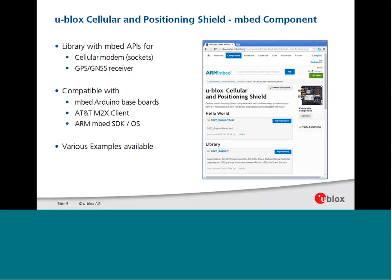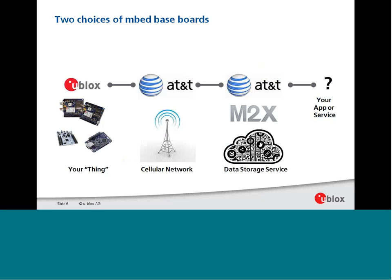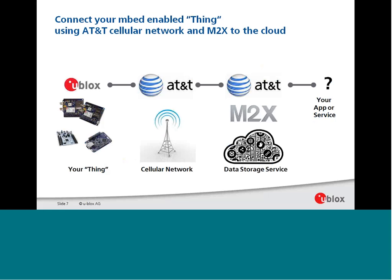The shield is compatible with the AT&T M2X client, so you can forward sensor data to the AT&T data cloud. It is also compatible with the embed SDK and operating system, with various examples available on embed.org. You have two choices of embed baseboards — the shield can plug on top of a FreeScale board or an ST board — and you can even stack additional sensor shields on top or connect extra devices. We recommend taking a baseboard from ST or FreeScale, selecting the uBlox cellular shield, and using the AT&T cellular network to connect to the internet and push data to AT&T M2X cloud.